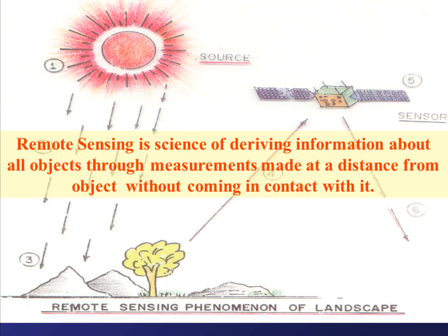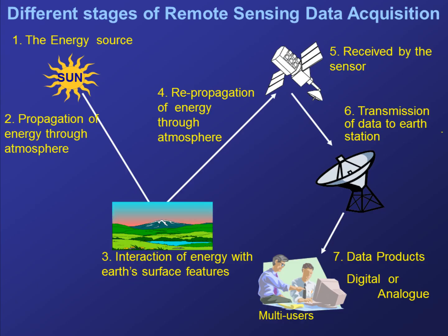Here you have seen a simple diagram of the remote sensing process. There is a sun, natural resources of the surface, and a satellite. This is a very simple diagram in which the sun, a satellite, and natural resources of the earth combine with each other and produce a remote sensing output, from which we get information.